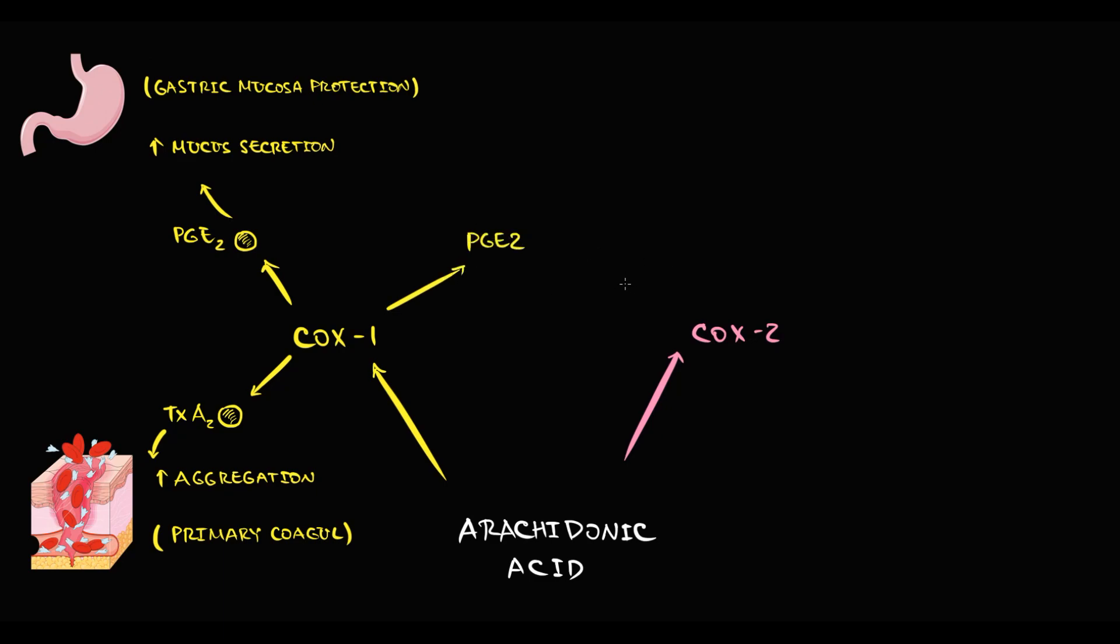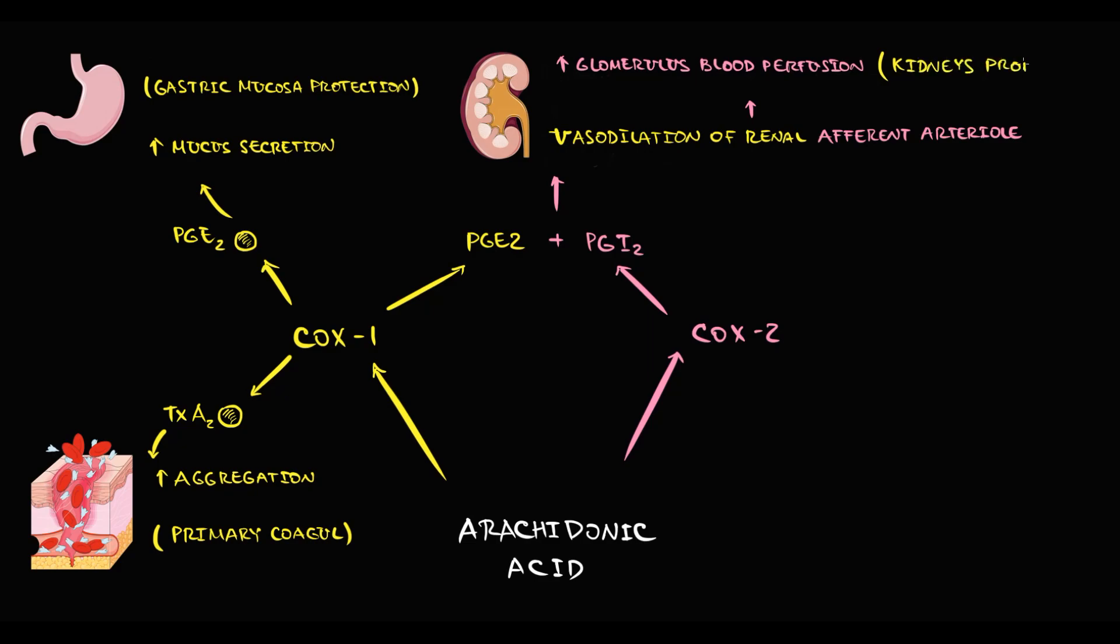Prostaglandin E2 combined with prostaglandin I2 from COX-2 enzyme induce vasodilation of renal afferent arteriole. By vasodilation of afferent vessel, they maintain normal blood perfusion of the glomerulus, which is absolutely crucial. Basically, prostaglandin E2 and prostaglandin I2 provide kidney protection.